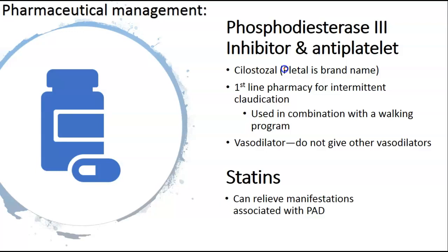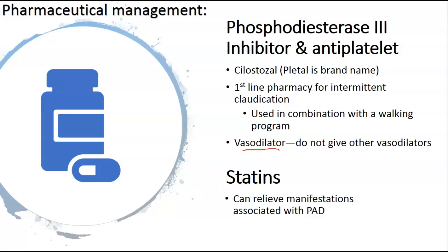Phosphodiesterase inhibitors — cilostazol (Pletal) is a brand name and is usually the first line for those with intermittent claudication. It's often used in combination with a walking program. It is a vasodilator, so make sure you don't give it with other vasodilators. Statins can help with the manifestations associated with PAD. With statins, remember that you need to make sure the patient doesn't have liver issues.